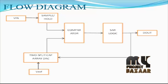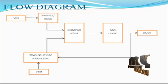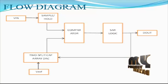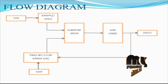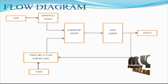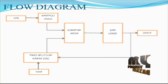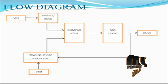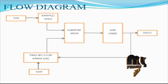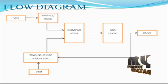Next we see the flow diagram for the process. First we apply the analog input signal, passing it to the sample and hold block. The sample and hold operates based on the time period, splitting the signal into continuous periodic samples, which are then applied to the comparator architecture.